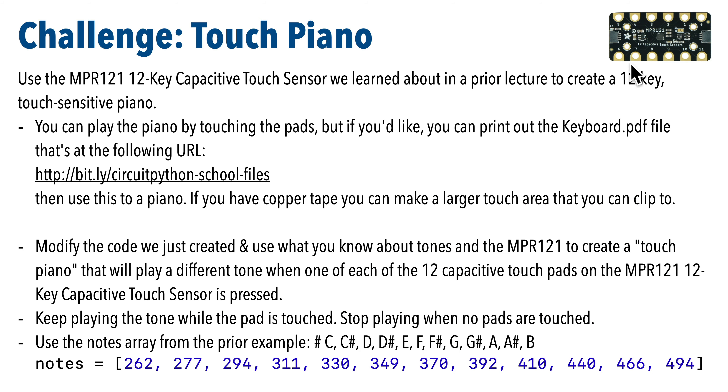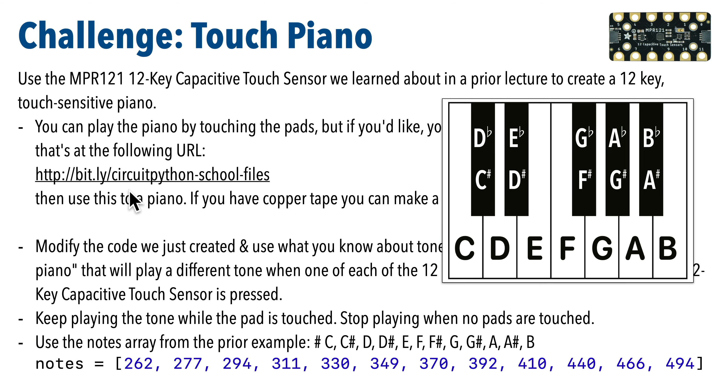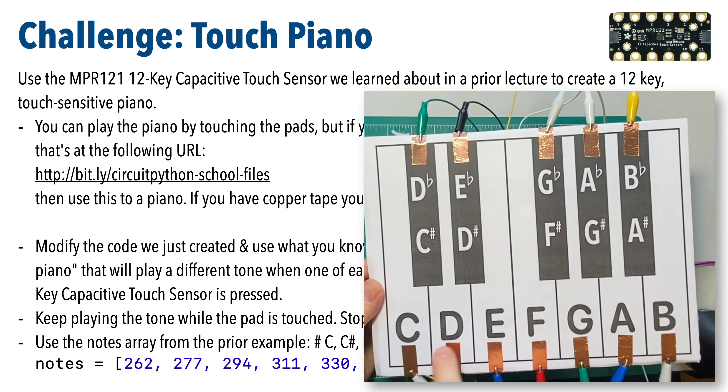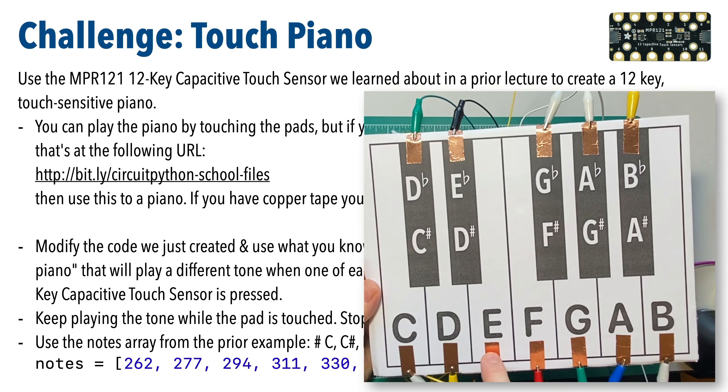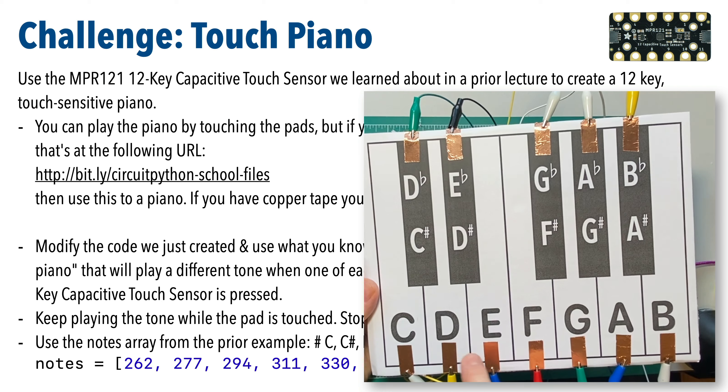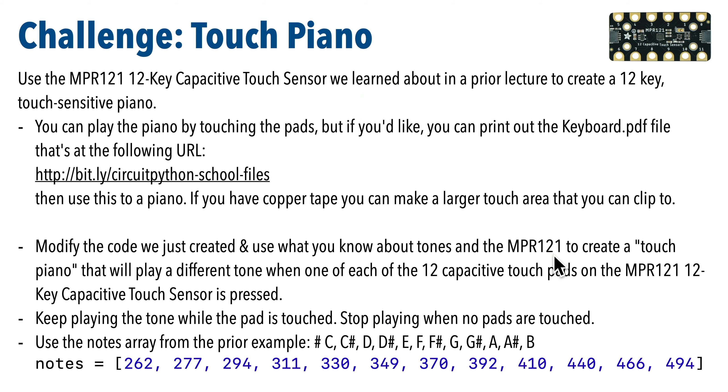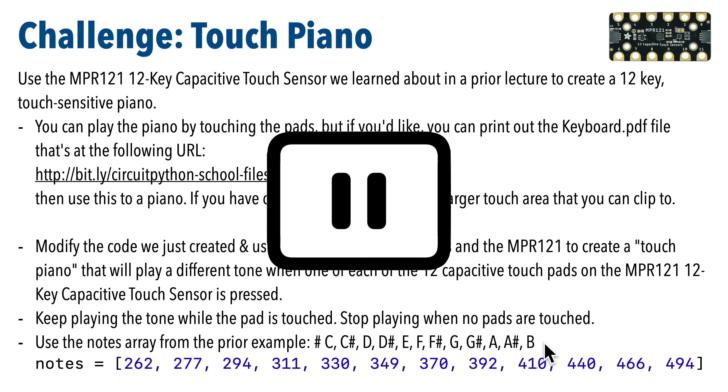If you'd like, you can print out the keyboard.PDF file at the following URL, where we save our circuit python school files - bit.ly/circuitpython-school-files, all lowercase. Then you can use the print out of this to create a piano, you can clip your clips to the piano. If you have copper tape, you can also use that to make a larger touch area that you can clip your clips to. Then modify the code that we just created and use what you know about tones and the MPR 121 sensor to create a touch piano that will play a different tone when any one of each of the 12 touch pads is touched. You want to keep the tone playing when the pad is touched and you want to stop playing when no pads are being touched. So use the notes from the prior example from C all the way to B. You've got the frequency for the various different notes in your notes array. Give this a shot. Pause. And I know you can do it.